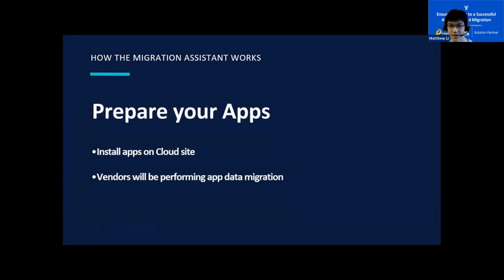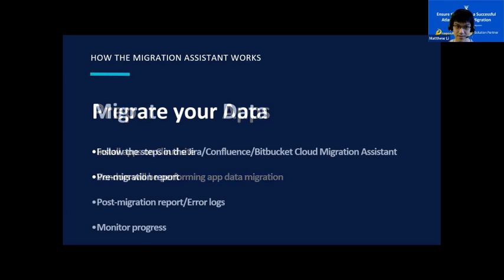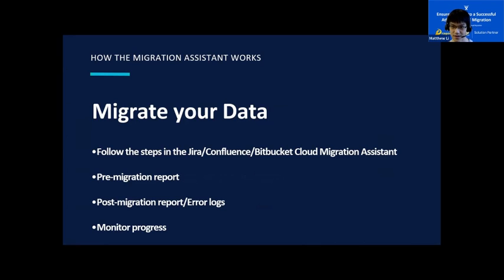The second step is to prepare your apps. The migration assistant will ask you to install the apps on the cloud site, and you can do it directly through the assistant. For each app, you will need to agree to app migration. Since the app data migration is performed through the vendor or the marketplace partner, you must review and agree to each marketplace partner agreement. Remember that once you agree to a third-party migration, you can revoke your agreement at any time. After configuring your migration, make sure to either save it or run it, and don't close out of the browser until either of those actions have been done.